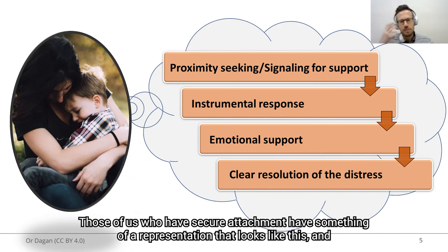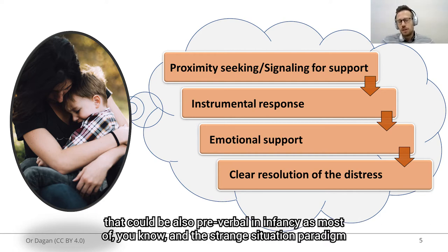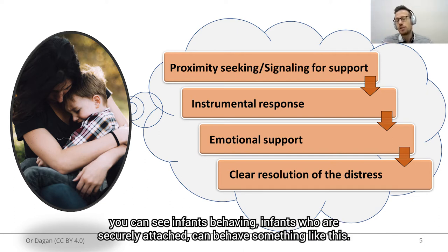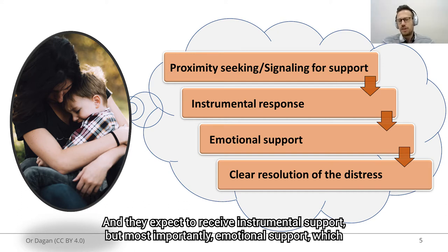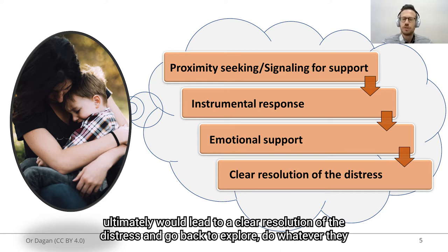Those of us who have secure attachment have something of a representation that could also be pre-verbal in infancy. In the Strange Situation paradigm, infants who are securely attached can behave something like this: they seek proximity under times of distress or signal for support, such as crying or yelling, and they expect to receive instrumental support, but most importantly, emotional support, which ultimately would lead to a clear resolution of the distress and a return to exploration.